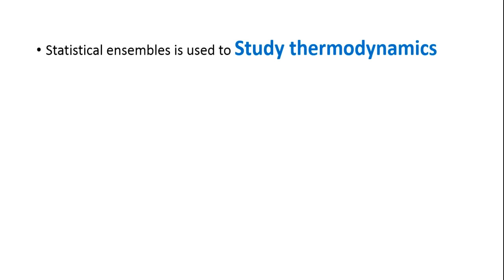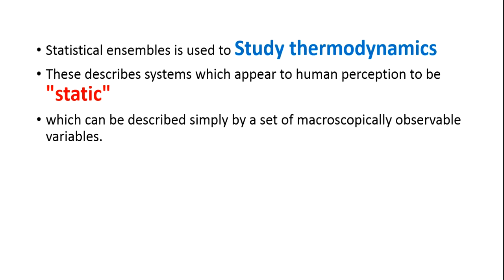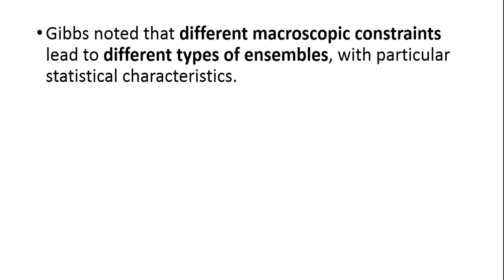A statistical ensemble is mainly used for the study of thermodynamics to obtain various thermodynamic parameters. These ensembles are used to describe systems which appear in human perception to be in a static state and which are described simply by macroscopically observable variables. The statistical ensemble depends only on a few observable parameters and is in statistical equilibrium. Gibbs noted that different macroscopic constraints lead to different types of ensembles, each with particular statistical characteristics corresponding to different systems like closed or open systems.